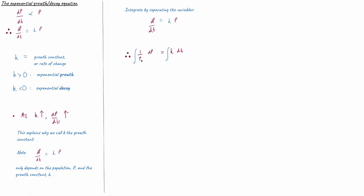Integrating one over P with respect to P gives us the natural log of P, and integrating k with respect to t gives us kt — remember k is just a constant, for example k might equal three, in which case we'd have 3t. Of course we mustn't forget the constant of integration, the plus c. Let's call this equation number one.